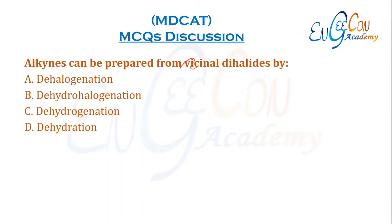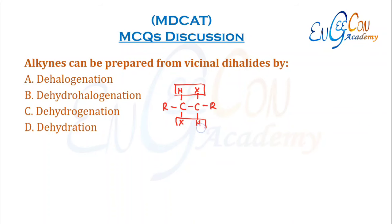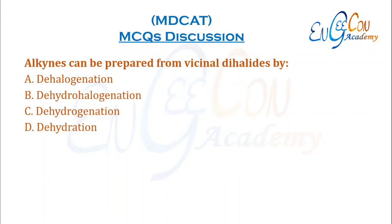Alkynes can be prepared from vicinal dihalides by which process? From a vicinal dihalide, we remove HX from above and below to form an alkyne. This process is called dehydrohalogenation. B is the correct option.